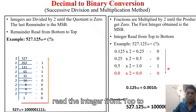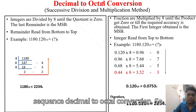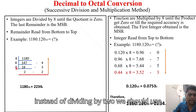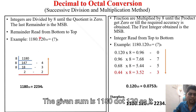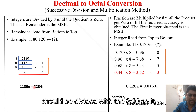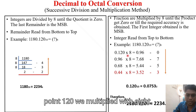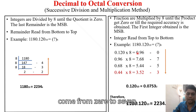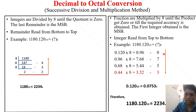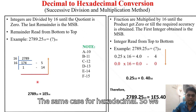For decimal to octal conversion, instead of dividing by 2 we divide by 8. For the given number 1180.120, dividing the integer part by 8 gives 2234. For the fractional part 0.120, we multiply by 8. Values must remain between 0 and 7; the same method applies for decimal to hexadecimal, dividing and multiplying by 16.